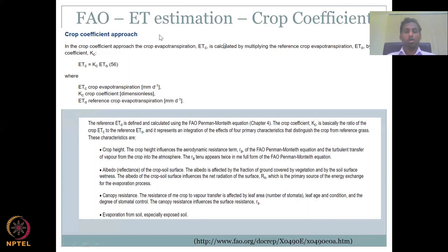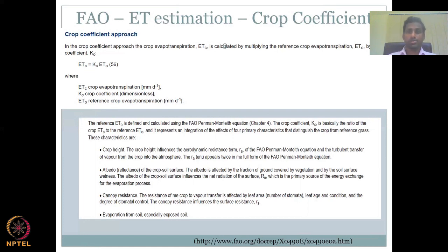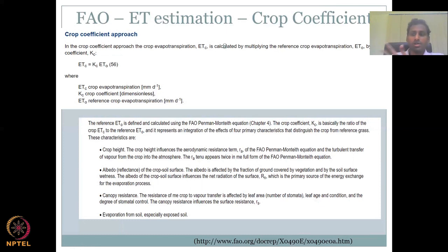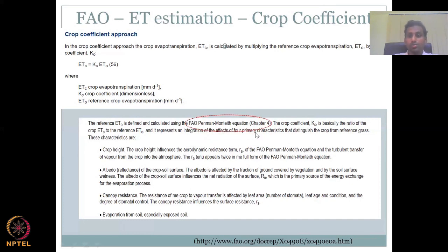We use alfalfa crop as the reference crop for our region. ET₀ would be a higher value whereas KC would be a closer, proportionality constant value. ET_C is a multiplication of KC and ET₀. The reference ET₀ is calculated using the FAO Penman-Monteith equation, which is a function of multiple variables: wind speed, temperature, incoming and outgoing radiation. It is a complex equation which FAO has done for you — you can take ET₀ from Chapter 4 and estimate ET_C by knowing the KC, which is also given by FAO.